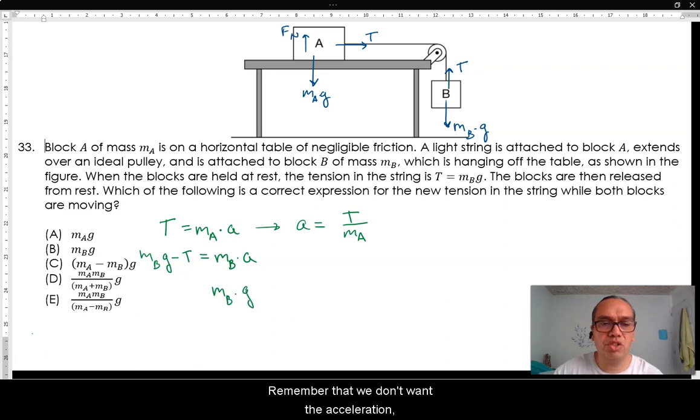Therefore, MB times G minus the tension is equal to MB over MA times the tension.